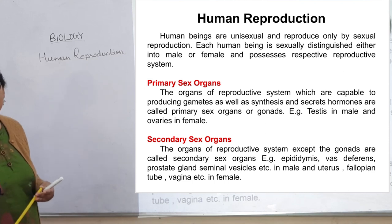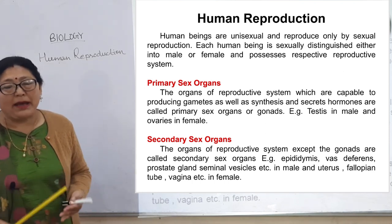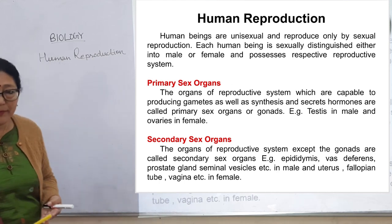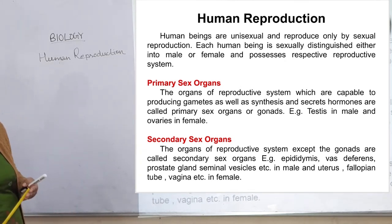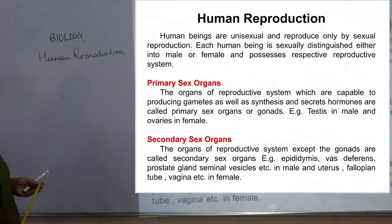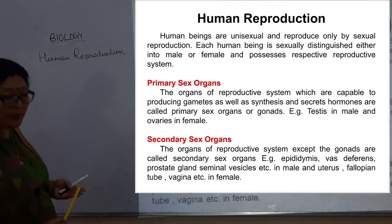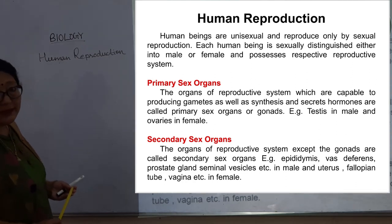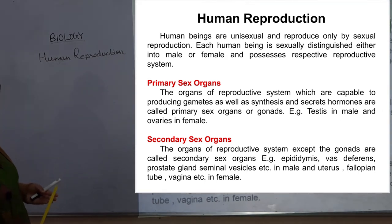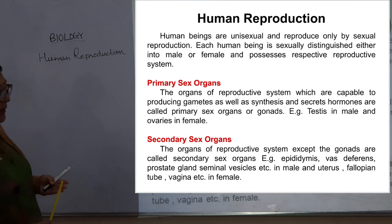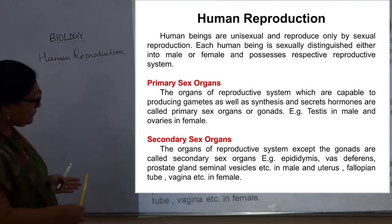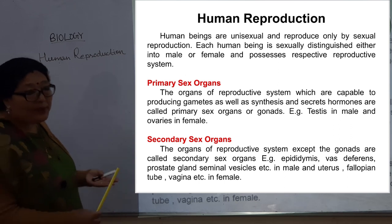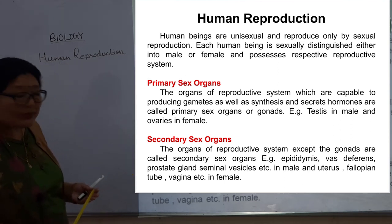The organs of the reproductive system except the gonads are called secondary sex organs. For example, in male: epididymis, vas deferens, prostate gland, seminal vesicles, bulbourethral gland, etc. These are the secondary sex organs in male.